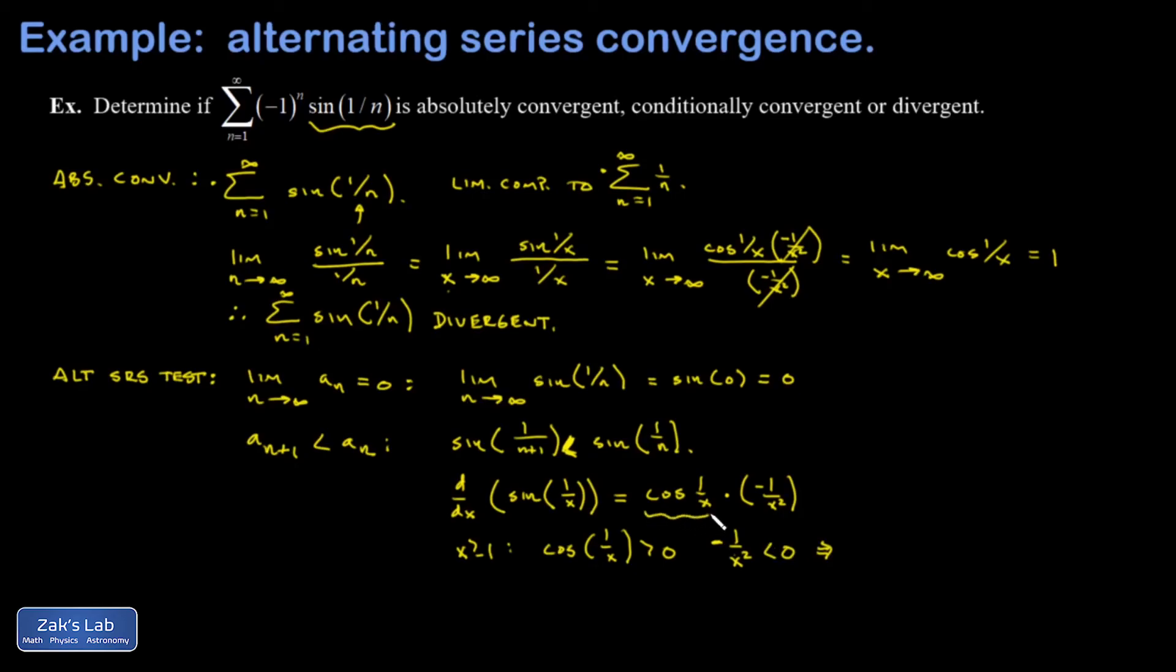So that means this product, cosine 1 over x times negative 1 over x squared, is always a negative number. In other words, sine of 1 over x squared prime is less than 0. That means it's a decreasing function.